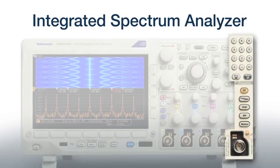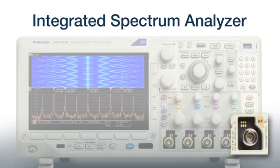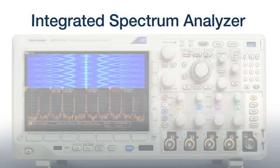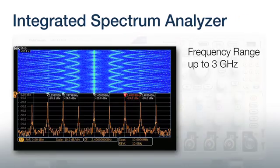Every MDO3000 ships standard with an integrated spectrum analyzer. The dedicated RF input channel provides better performance than an oscilloscope FFT and lets you analyze RF signals right on your scope.